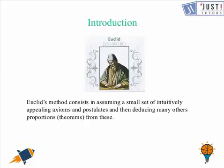Now let's move on to the topic with a quick introduction on Euclid's geometry. Euclidean geometry is a mathematical system attributed to the Alexandrian Greek mathematician Euclid. Euclid's method consists of assuming a small set of intuitively appealing axioms and postulates, and then deducing many other propositions — that is, theorems — from these.